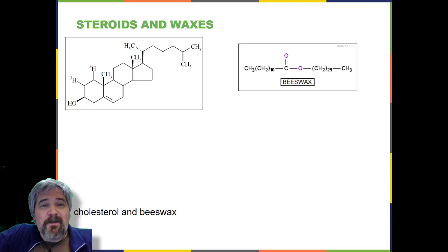Waxes are made up of a hydrocarbon chain with an alcohol group and a fatty acid. Examples of animal waxes include beeswax and lanolin. Plants also have waxes, such as the coating on their leaves, that helps prevent them from drying out.